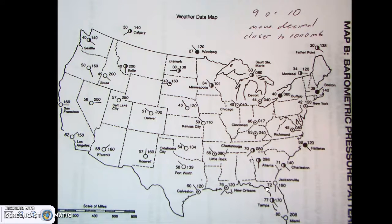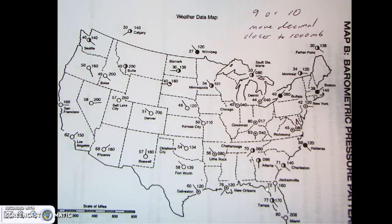On Map B we're not going to have parallel lines — instead you should see circles. Decode your air pressures and you should see a center of high pressure and a center of low pressure, giving you two circular patches on the map: one marking where high pressure is and the other marking where low pressure is.